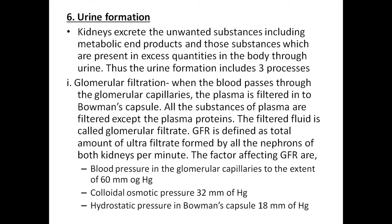Sixth question is urine formation. Kidneys excrete unwanted substances including metabolic end products and those substances which are present in excess quantities in the body through the urine. Urine formation includes three processes. First is glomerular filtration — when blood passes through the glomerular capillaries, the plasma is filtered into the Bowman's capsule. All the substances of plasma are filtered except plasma protein. The filtered fluid is called glomerular filtrate.